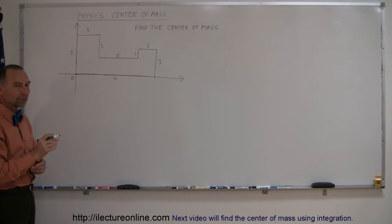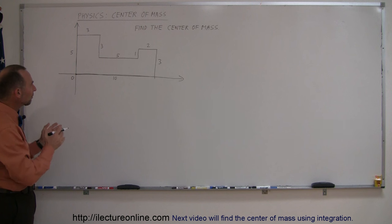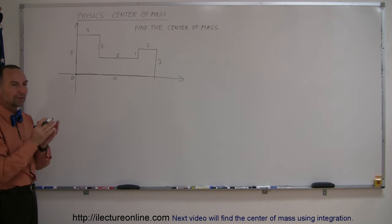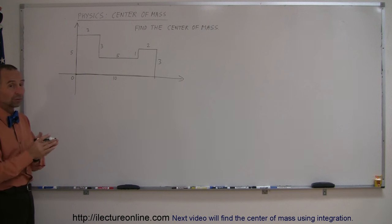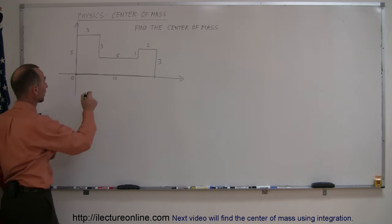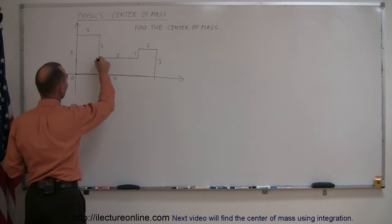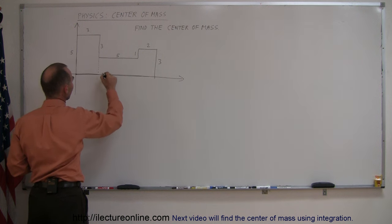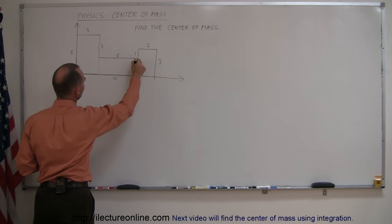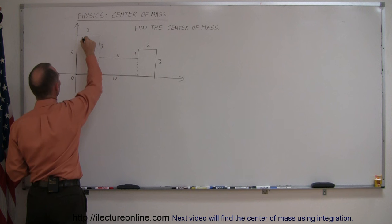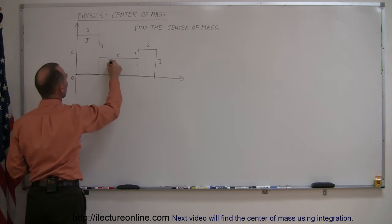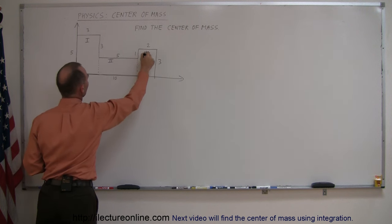The next thing we're going to do is divide this into however many pieces we need to, so that we can come up with pieces where it's easy to find the center of mass of each individual piece — and that's typically rectangles or squares or something like that. So if we cut it over here and cut this over there, we now have three different pieces: piece number one, piece number two, and piece number three.